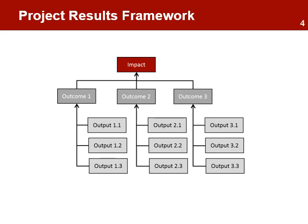The results framework may include one or more outcomes, each necessary to contribute to the long-term impact. Each outcome will include all the necessary outputs required to achieve the outcome objective. This level is important — each outcome must have all the required outputs. The project will not be able to achieve the outcome objective if one of the outputs is not delivered.